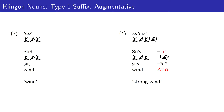On the left we have our third example: 'shosh', meaning wind. On the right, we see the augmented version of this word: 'shosh-a', referring to a strong wind. Here, 'shosh', the word for wind, is modified with a type 1 augmentative suffix, shown in red.